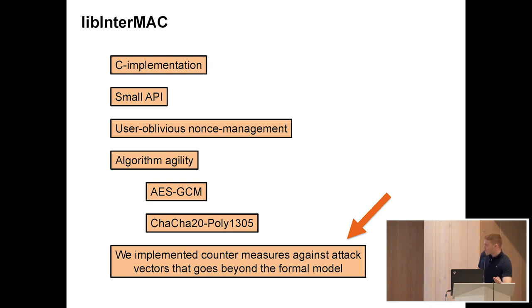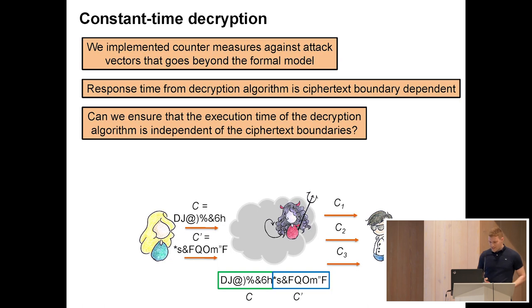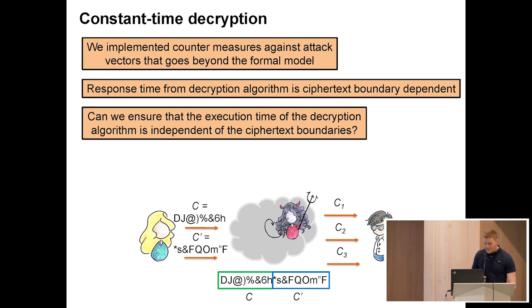We also tried to identify attack vectors that go beyond the formal model and implement countermeasures against them. This shows that even though InterMAC has a really simple description, you have to keep track of a lot of things when implementing it. One issue we identified was with the decryption algorithm. Let's rewind and go back to the boundary hiding notion: recall that it says the adversary cannot delineate ciphertext boundaries in a sequence of ciphertexts.